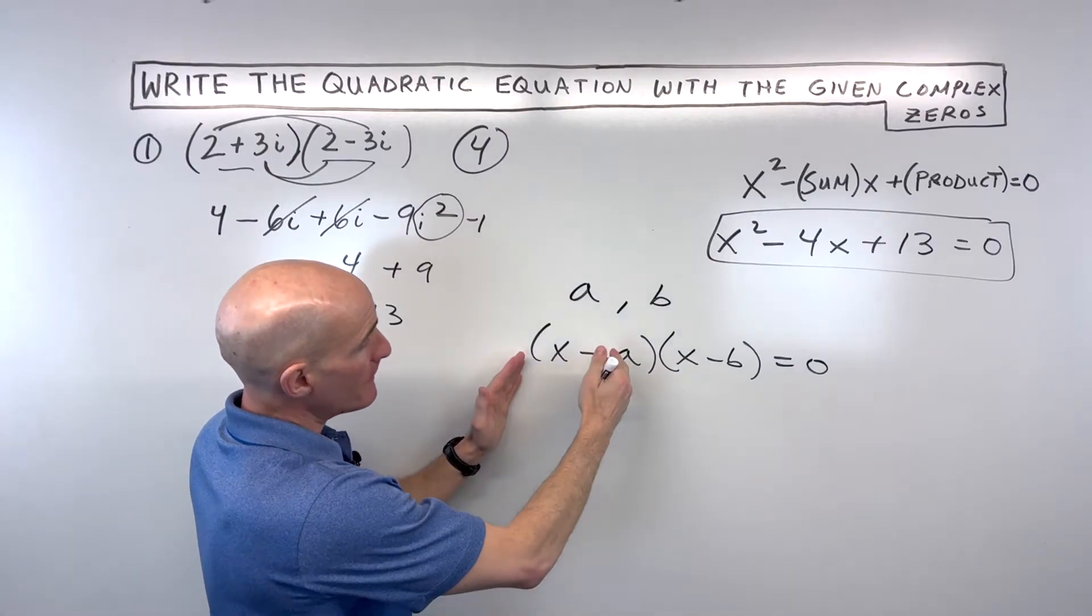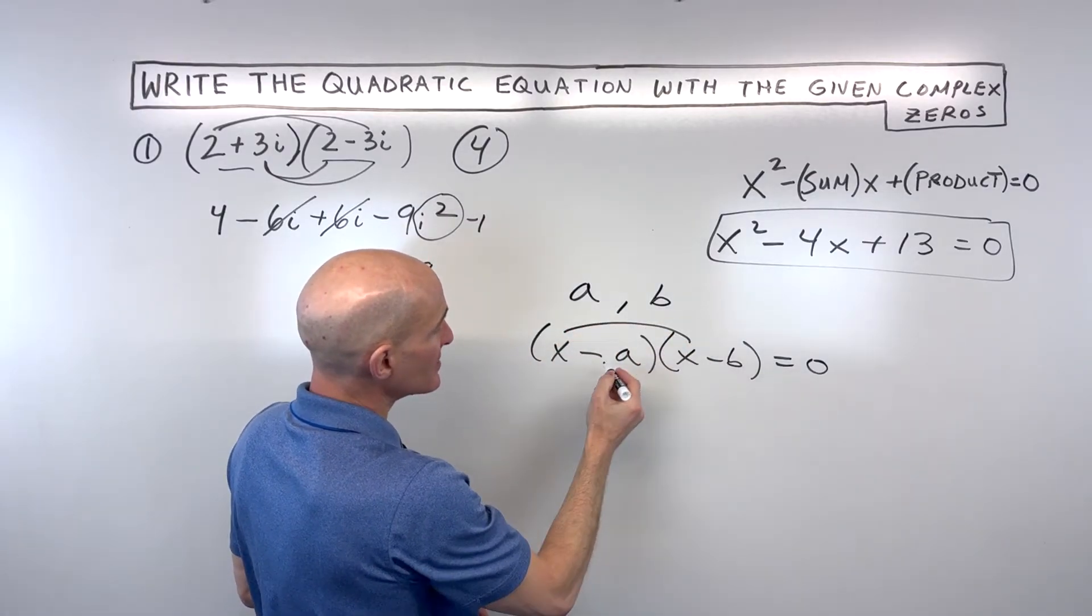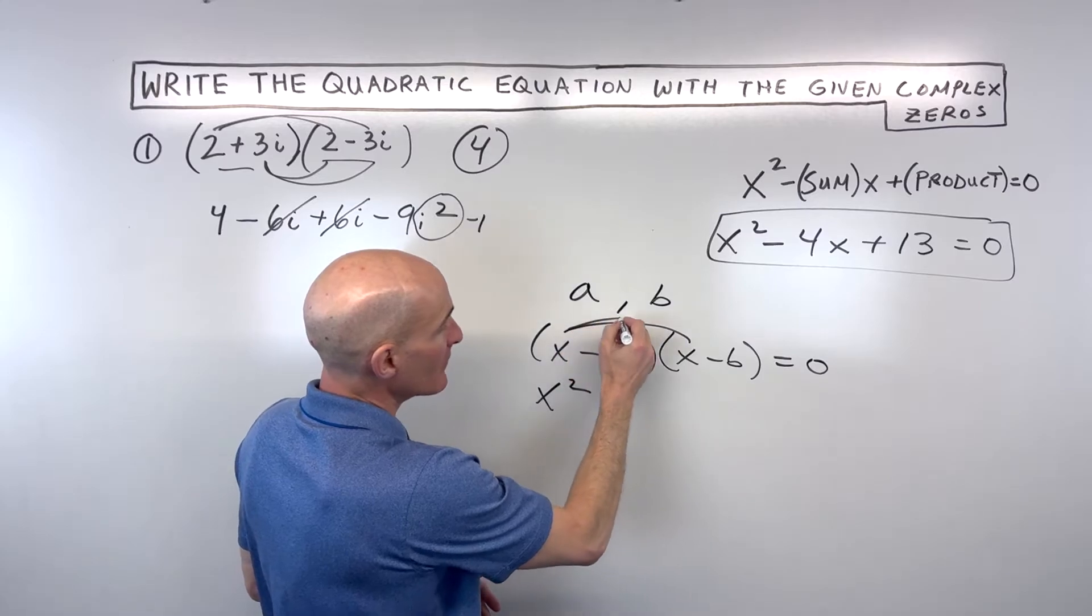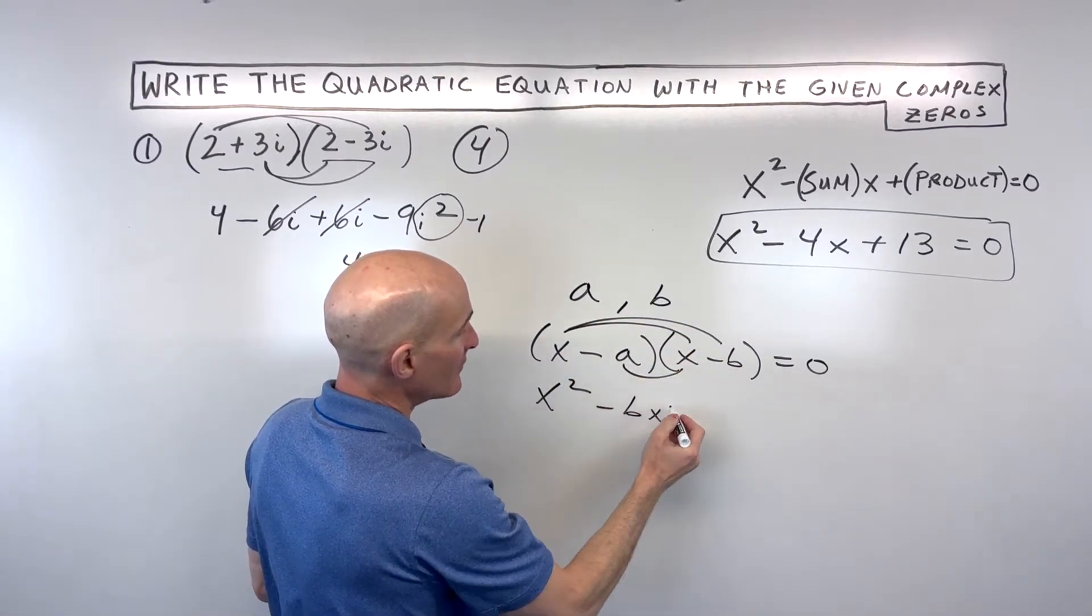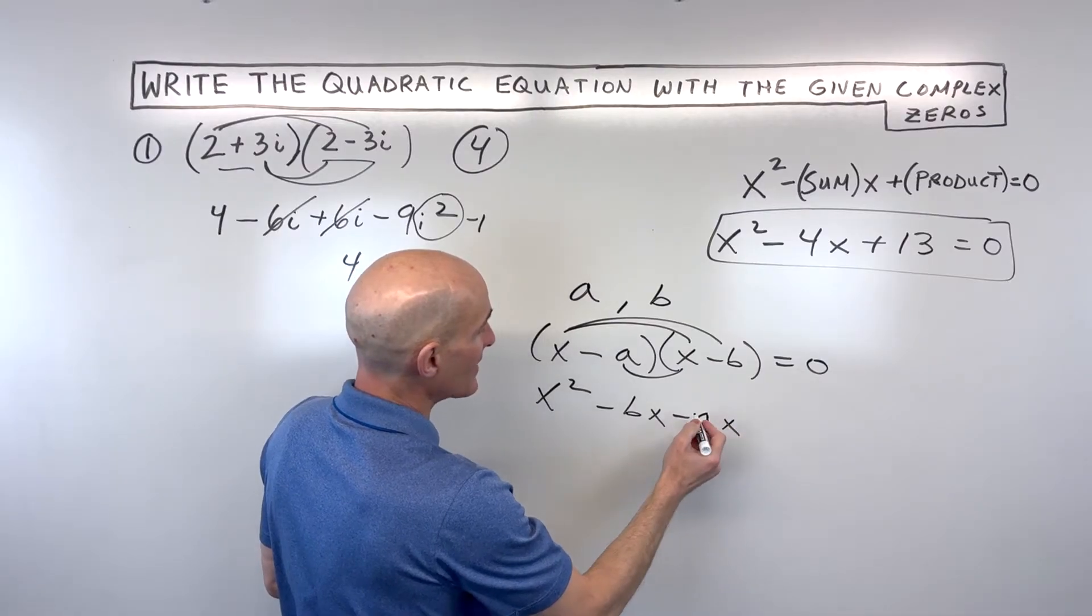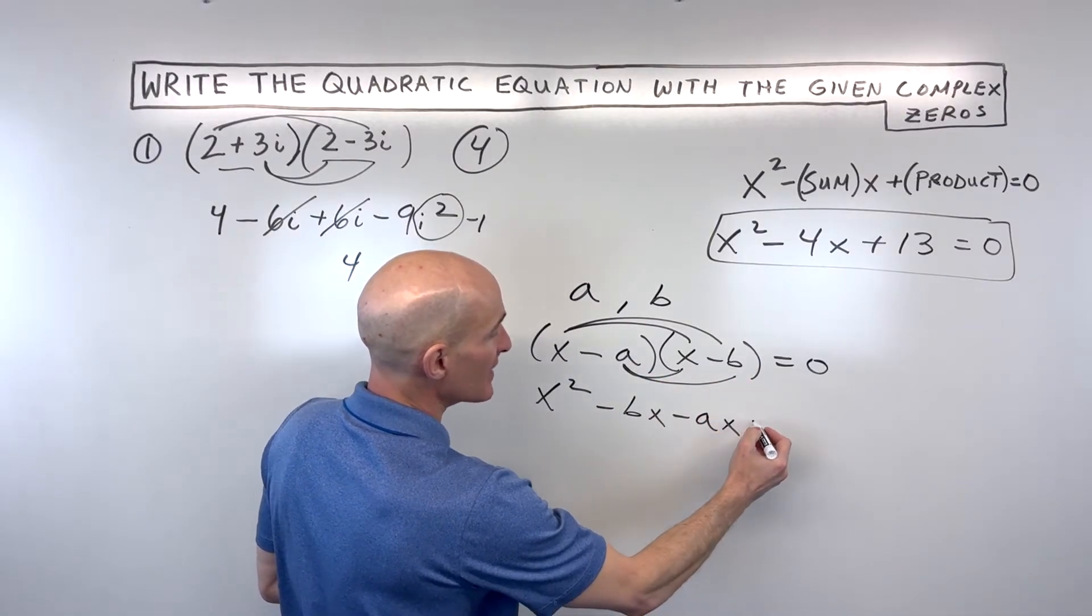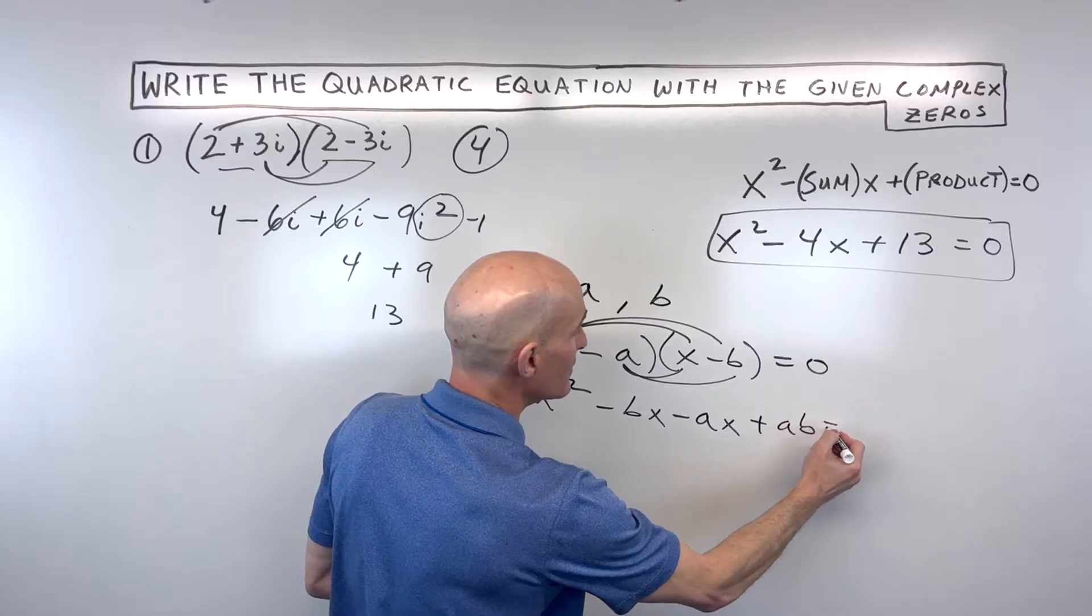So now if we go ahead and multiply this together, we get x times x is x squared. x times negative b is negative bx. Negative a times x is negative ax. Negative a times negative b is positive ab.